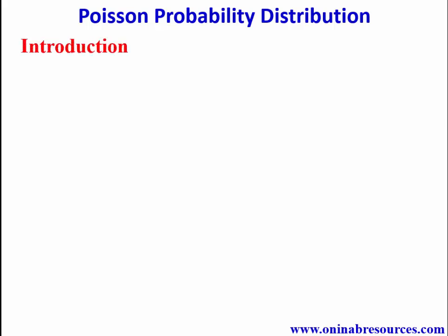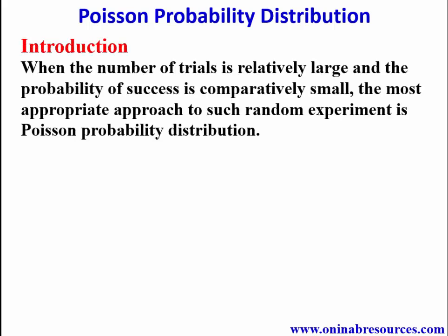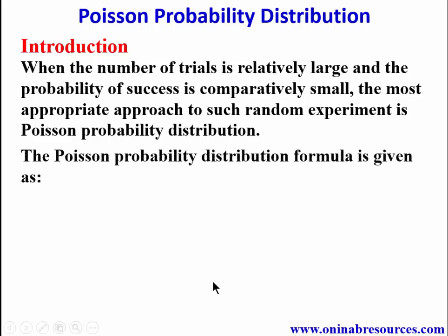In the introductory part of the video: when the number of trials is relatively large and the probability of success is comparatively small, the most appropriate approach to such a random experiment is the Poisson probability distribution.